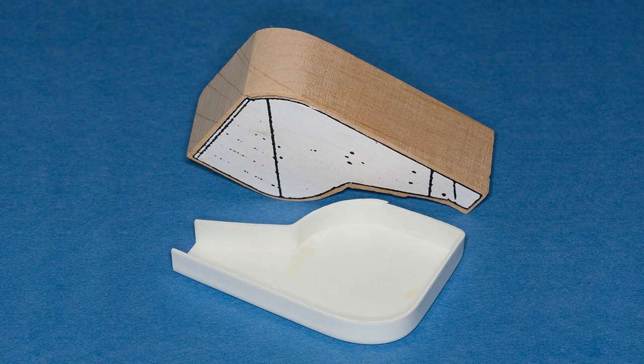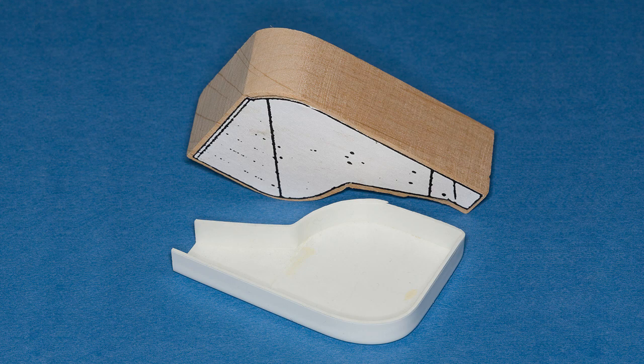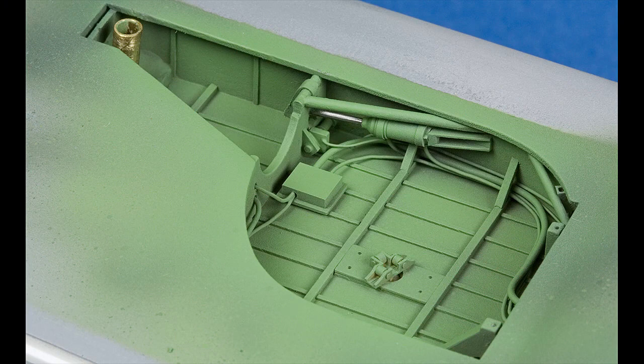Vacuum forming of sheet styrene has many uses. Here, a wooden form was made to create two identical wheel wells for the 1/32nd scale Hawker Tempest.